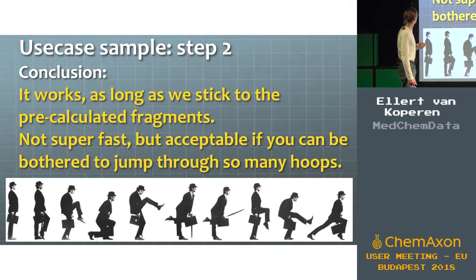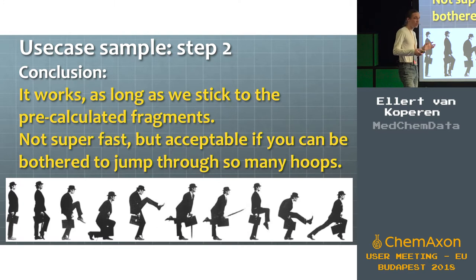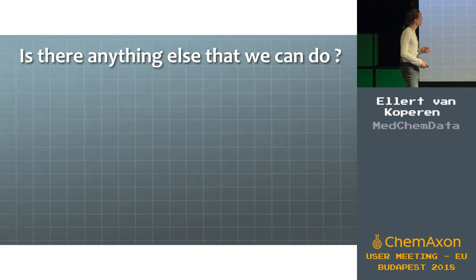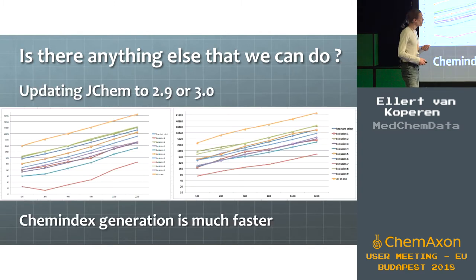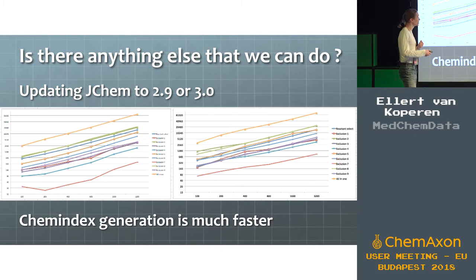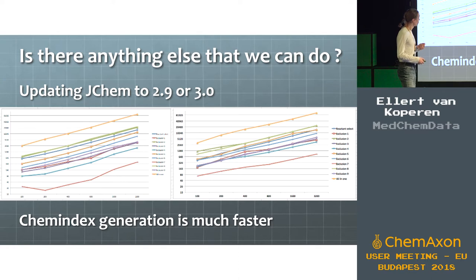So the conclusion is: can we get it to work? Yeah, kind of — as long as we stuck to all the pre-calculated fragments, it kind of worked a little bit. But it was basically the Ministry of Silly Walks — we did lots of funny things and in the end it didn't really have much effect. Is there anything else we can do? We tried updating to newer and then the newest versions. The tests show they are basically exactly the same, except there was a significant improvement in the speed of generation of the indexes themselves — almost a factor of three.